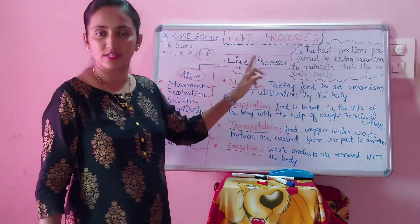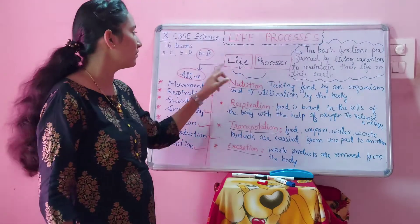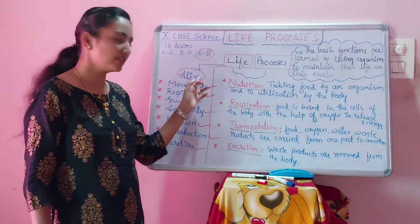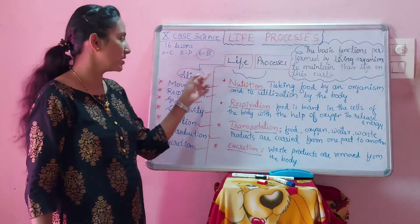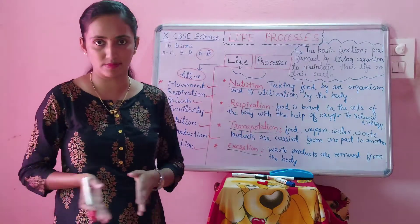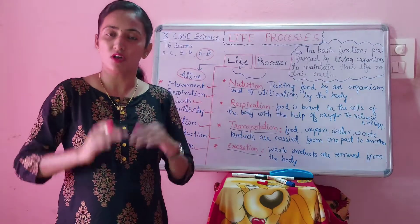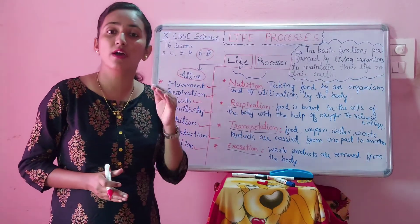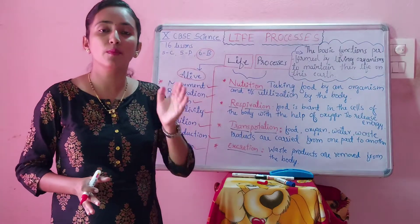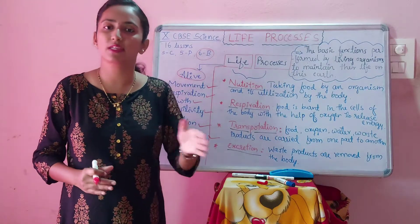Let us start Life Processes. At first we will study about 'life', then we will go to 'processes'. What is the meaning of life? Life means alive. So in this earth we can see many living and non-living organisms. How do we recognize something as living or non-living? You have already learned this in your previous classes, including the difference between living and non-living organisms. By combining all those points, I have listed some basic properties of living organisms through which we can recognize something as living.